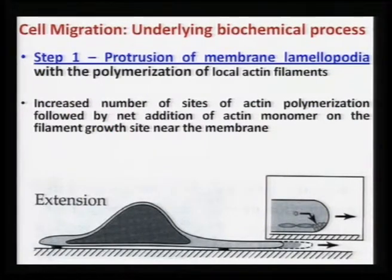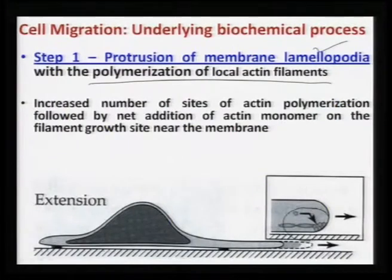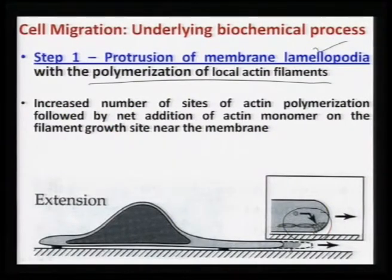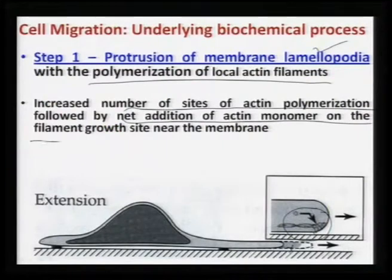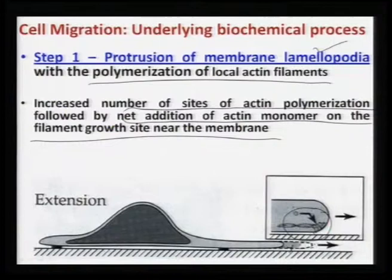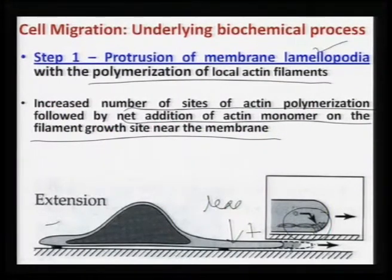Step 1 is the protrusion of the membrane lamellipodia, which takes place with the polymerization of local actin filaments. Monomer units of the actin filament come together and form polymers at the leading edge. This leading edge is shown as a dotted line, meaning actin polymerization has not yet taken place but will form a new focal point. An increased number of actin polymerization sites is followed by net addition of actin monomers at the filament growth site near the membrane.